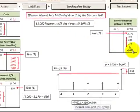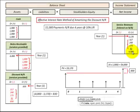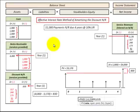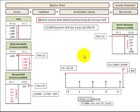Everything balances out — our service revenues of $4,000 match our notes receivable of $4,000. This is how we allocate the discount on a notes receivable and how we record the notes receivable when using discounting.